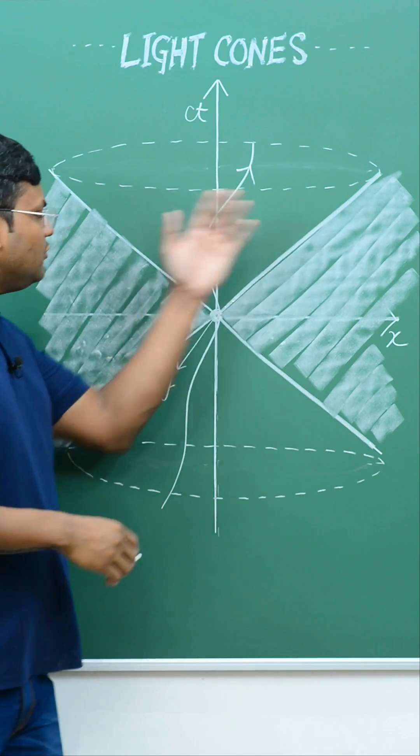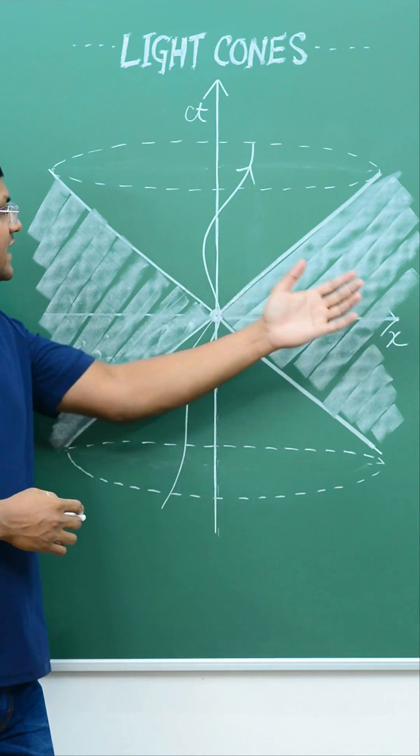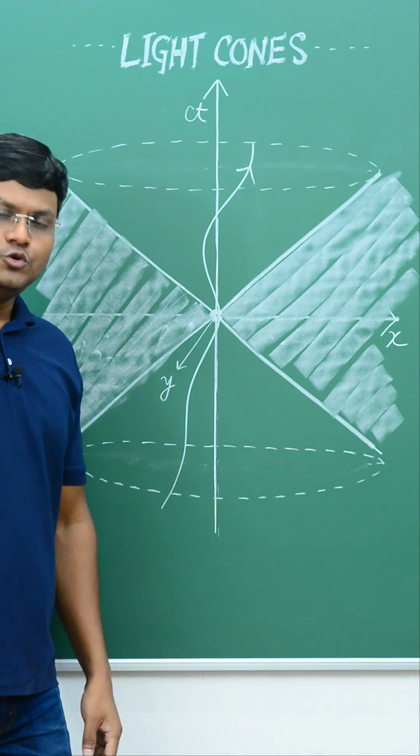So in a way, this light cone creates a boundary between physical events that are causally related or unrelated to one another.